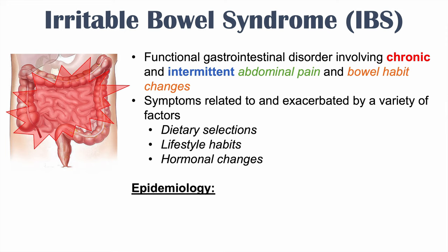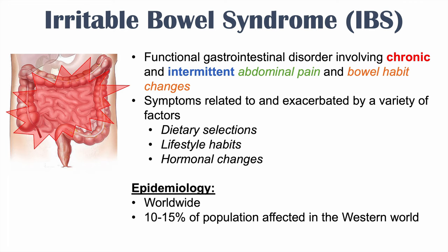What is the epidemiology of IBS? It is a worldwide phenomenon and it is relatively common. It's estimated that 10 to 15% of the population of the Western world is affected with IBS, and it's likely underreported or underdiagnosed. So a larger percentage of the population likely has IBS, and the onset of this condition usually occurs in young adulthood.